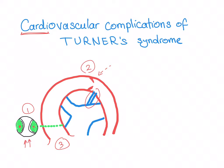Number three is aortic root dilatation, which will lead to aortic regurgitation and will increase the probability of aortic dissection. This is dangerous because a dilated root is weak and more liable to dissection.